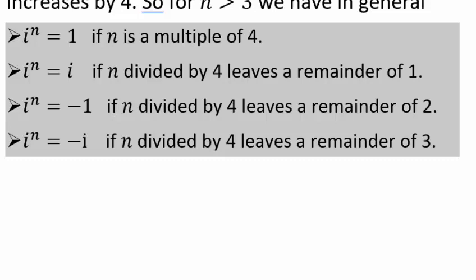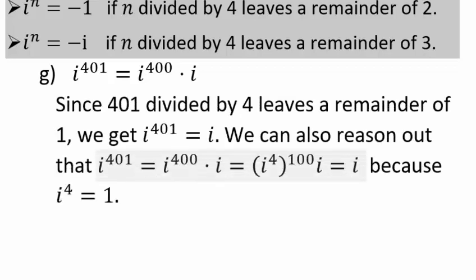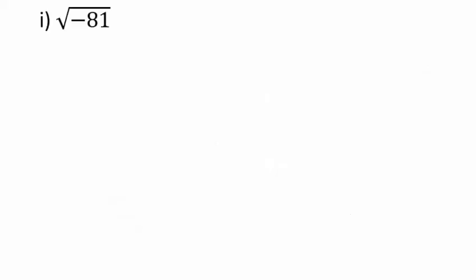For example, i^401 = i^400 · i. Since 400 is a multiple of 4, i^400 = 1, so i^401 = i. Alternatively, 401 ÷ 4 leaves remainder 1, so it's i¹ = i. For i^39: 39 ÷ 4 leaves remainder 3, giving -i. Or: i^39 = i^36 · i³ = 1 · (-i) = -i.